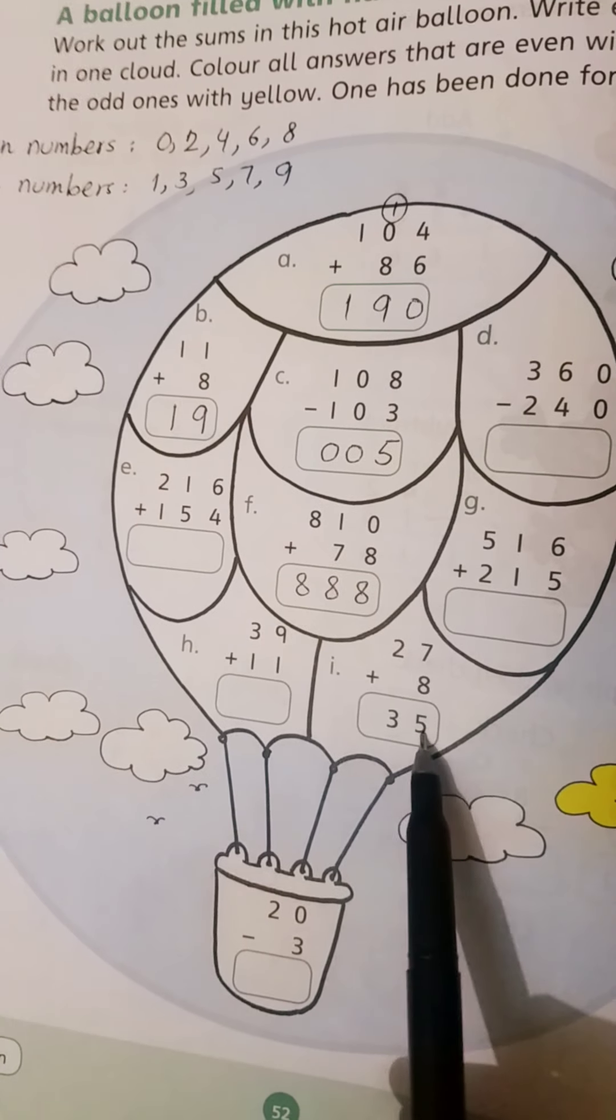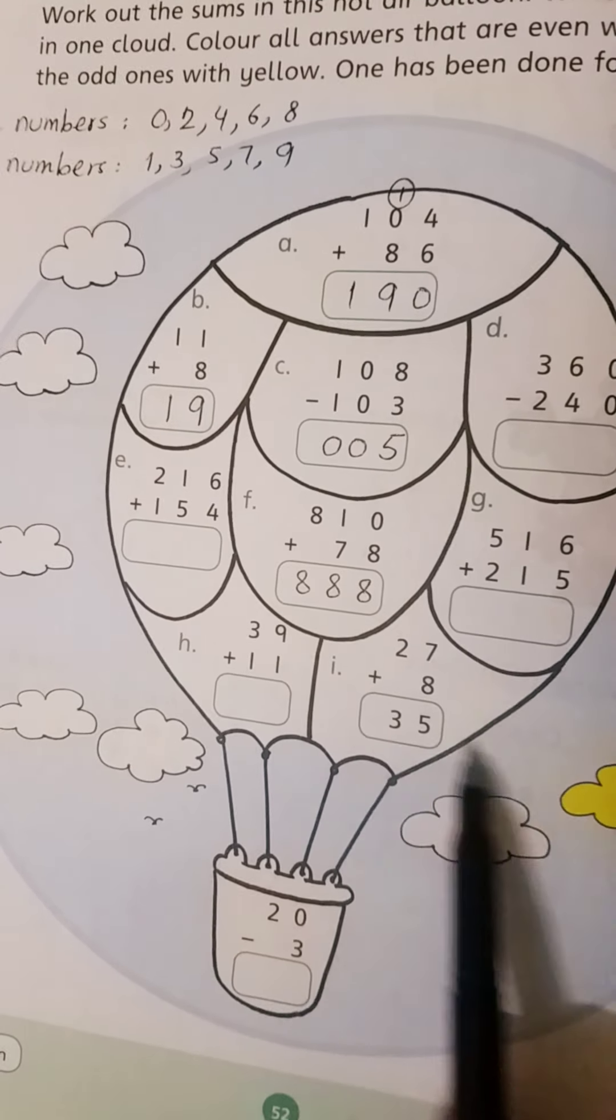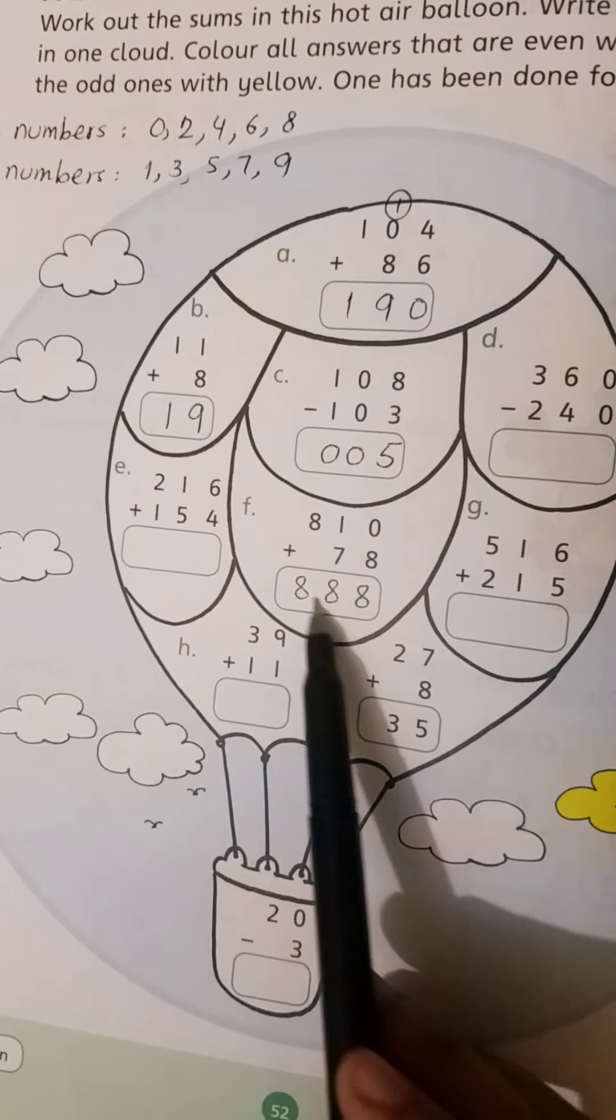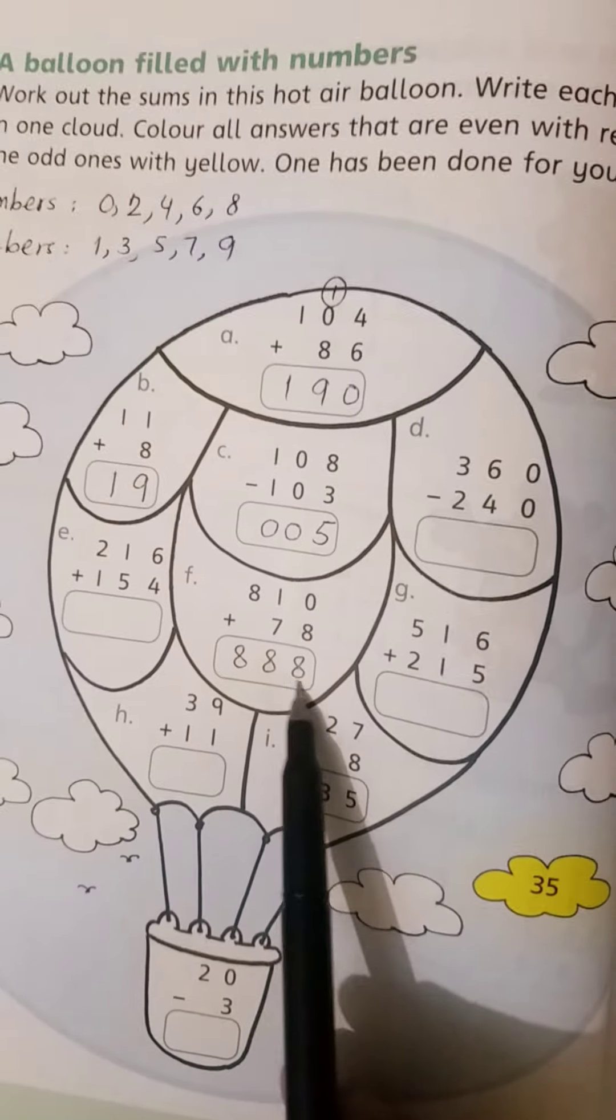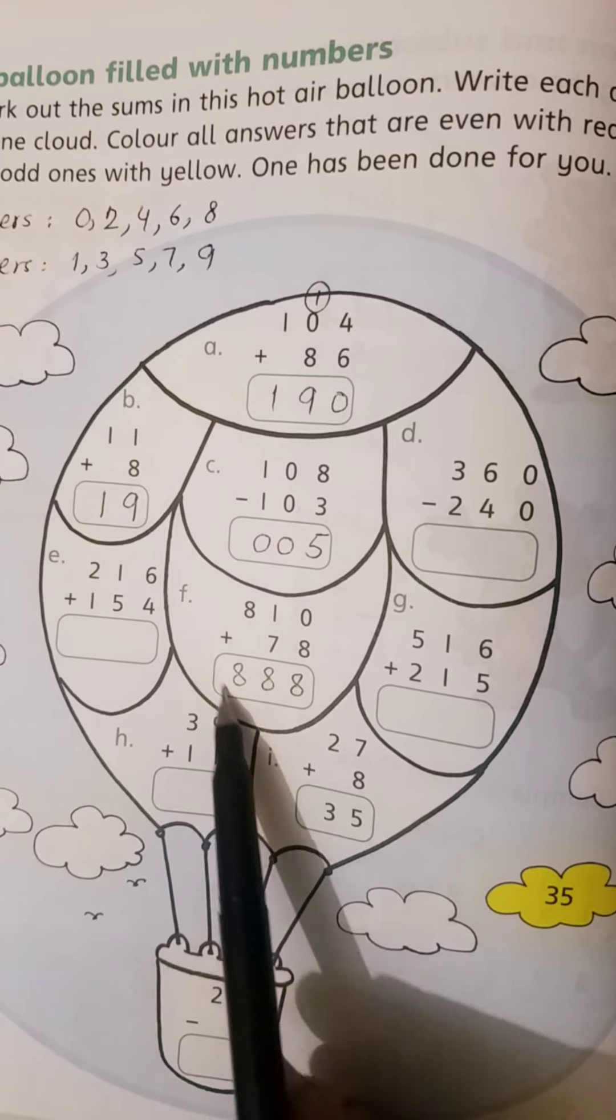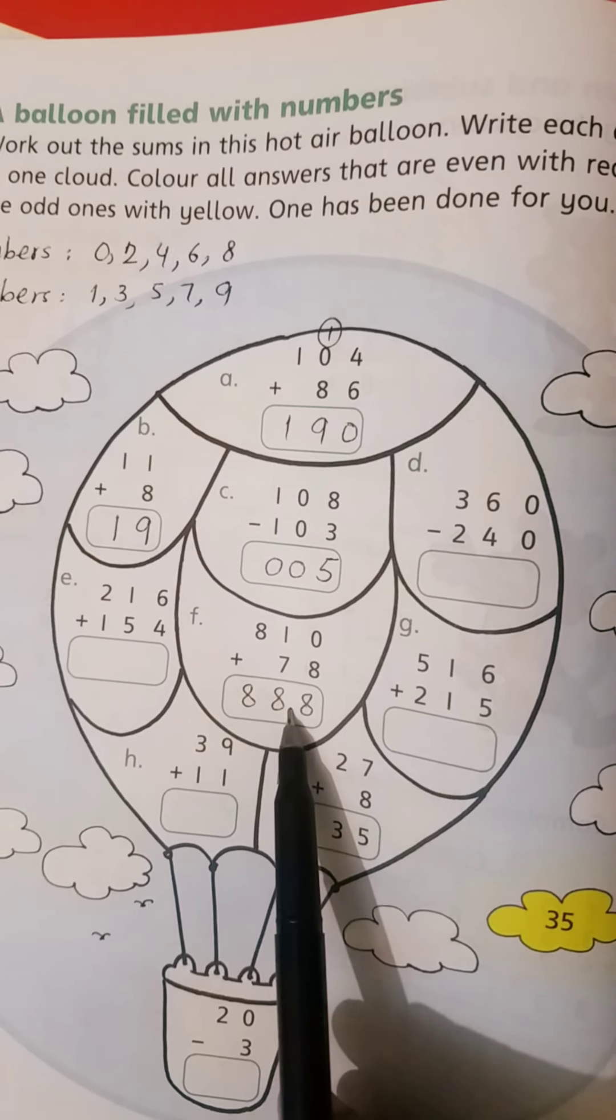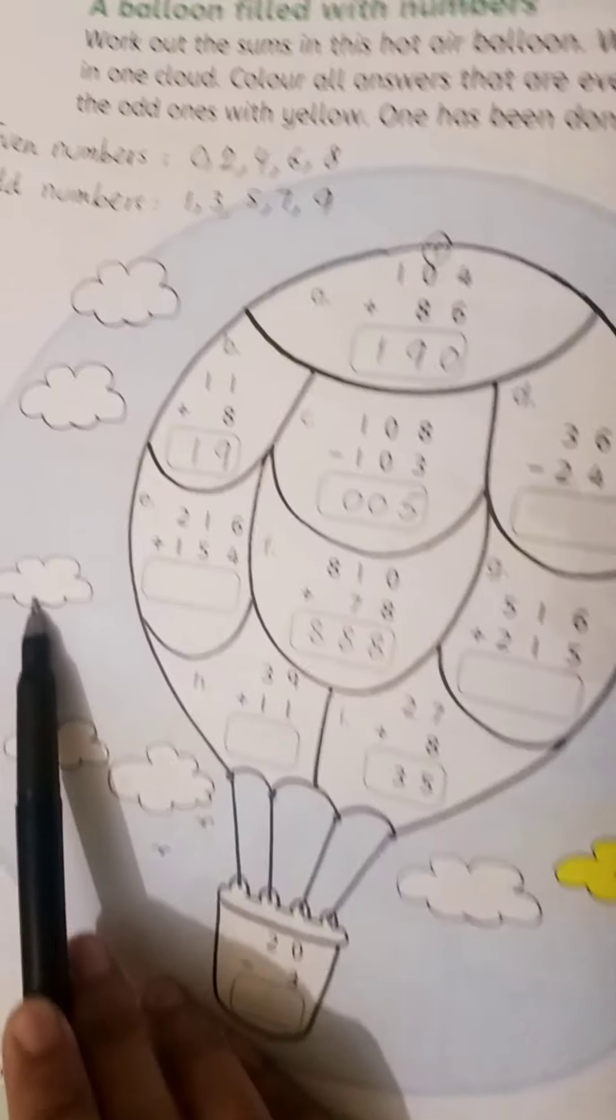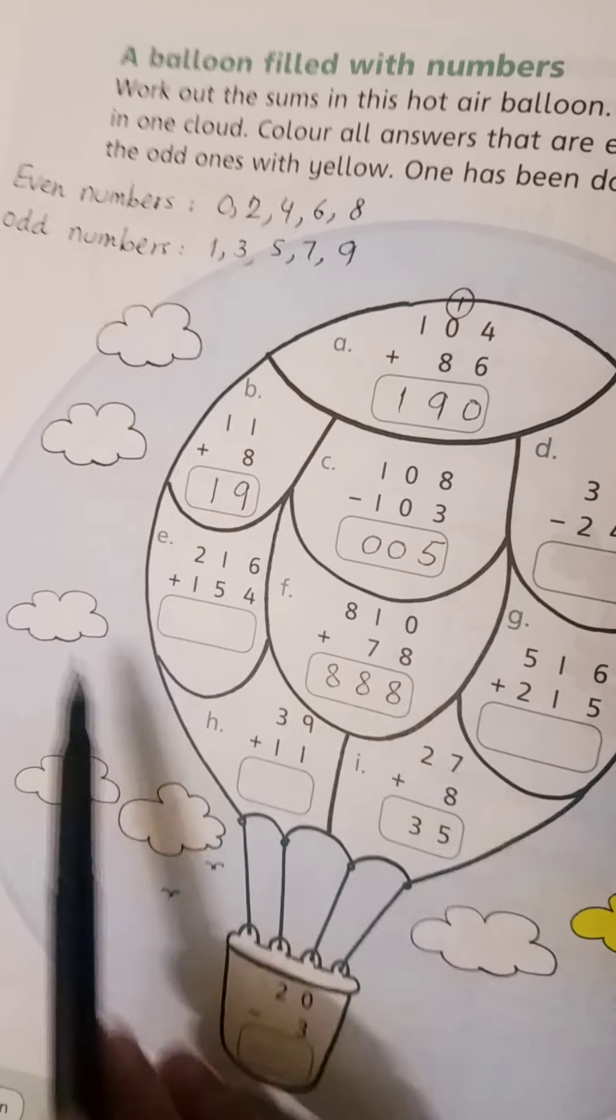Similarly, 35 is an odd number, yellow color. 888, the last digit is 8, which is even, so 888 is an even number. Write 888 and use red color. Complete this page.